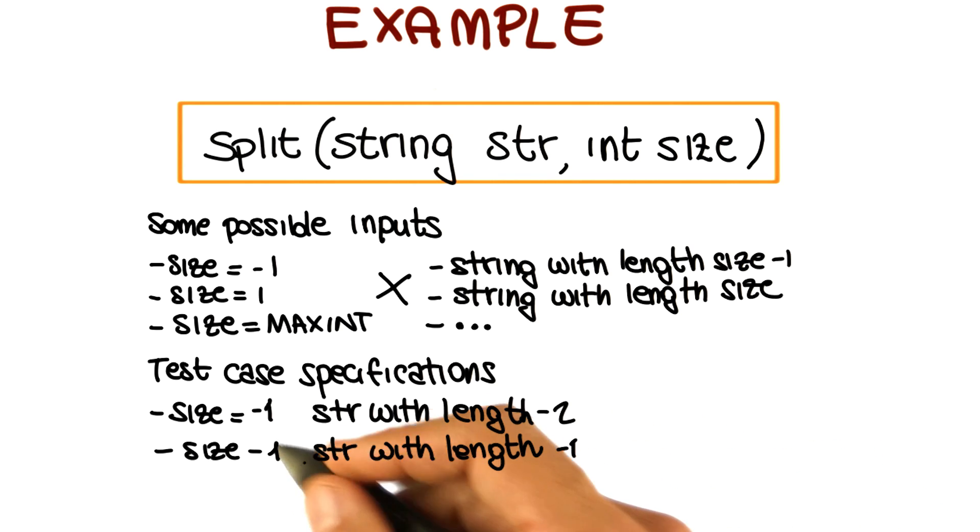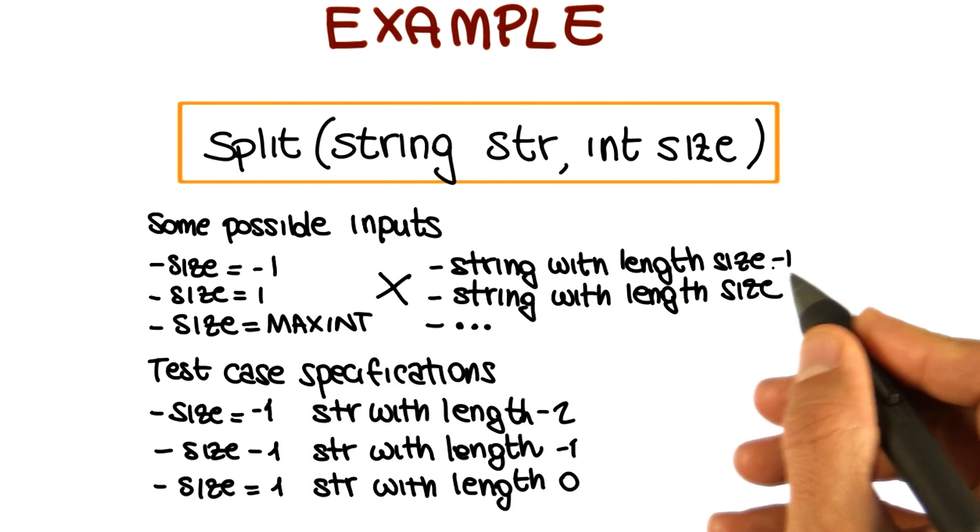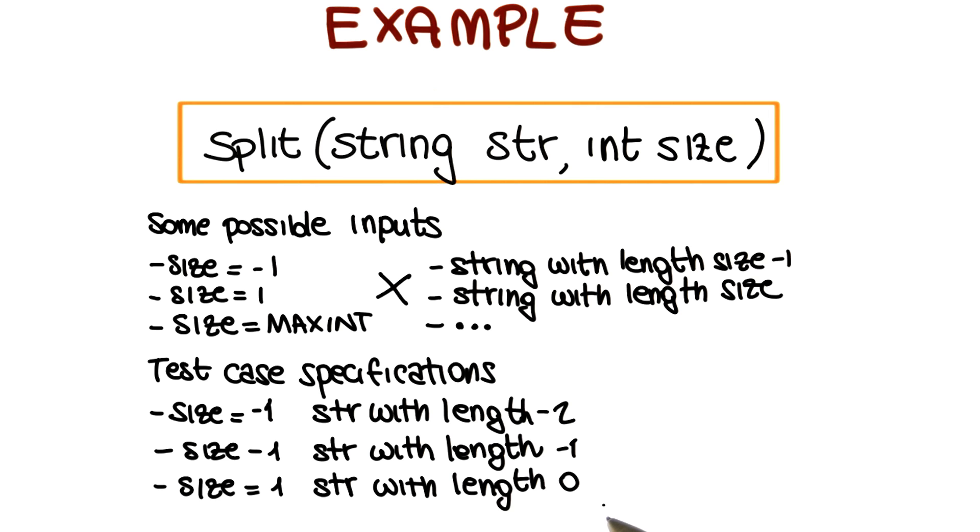Now if we consider the second possible value for size, size is equal to one. We also have two cases, so the first one in this case will be considering a string with length zero. So, the empty string. And we can continue combining this value.